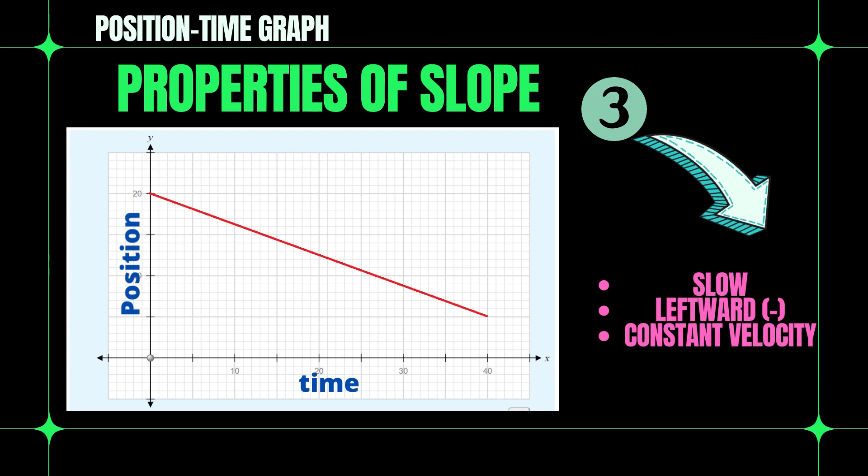Number three: this graph shows slope leftward, that is negative, and it has a constant velocity.